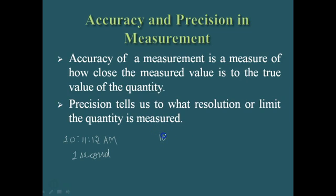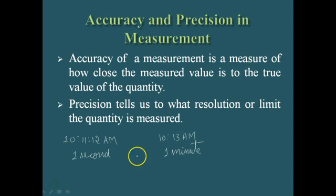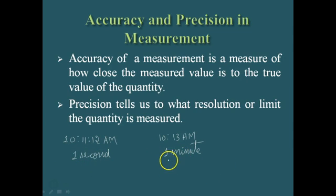Your grandfather's watch shows a time of 10:30 a.m. The least count of this watch is one minute, so compared to the digital watch, this watch is less precise. The digital watch can measure even seconds, but the grandfather's watch measures only in terms of minutes — precision is not there compared to the digital watch.